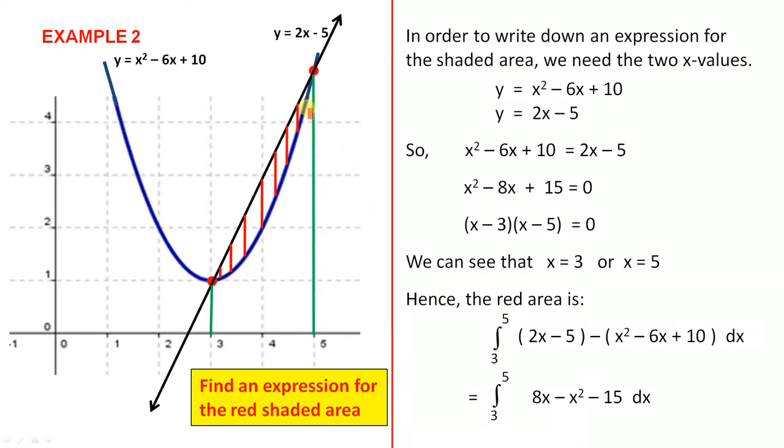Example two: Find an expression for the red shaded area. This area is bounded by the line y equals 2x minus 5, by the parabola y equals x² minus 6x plus 10, and we're going between those two green lines. Now we have to work out what those x values are.